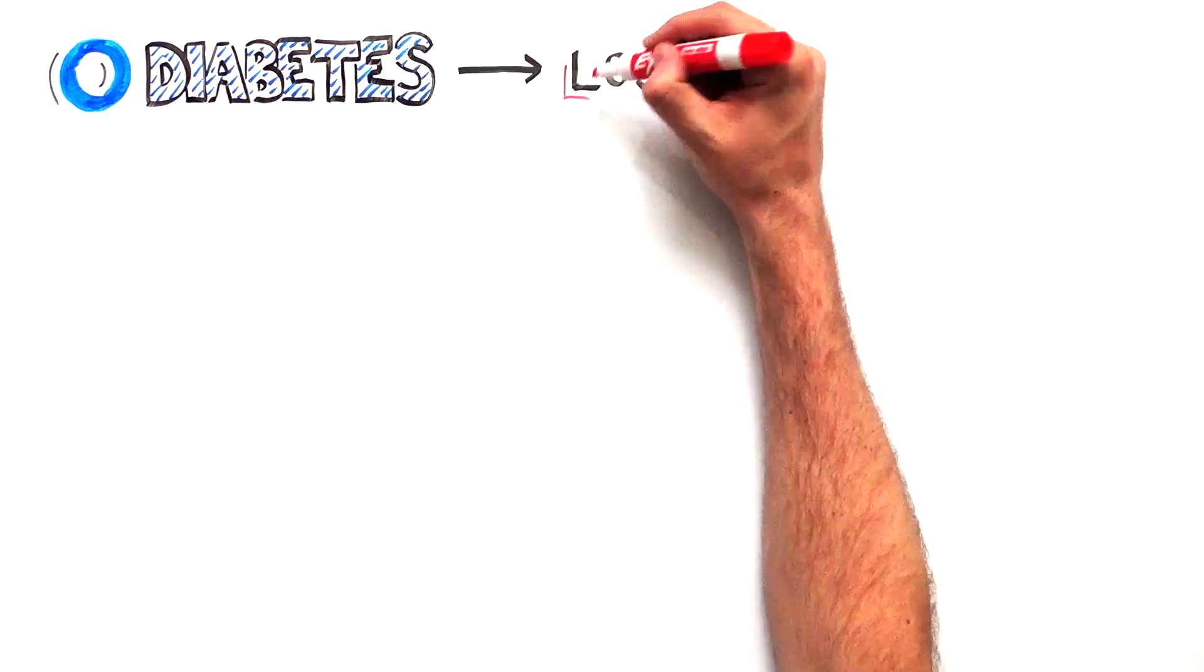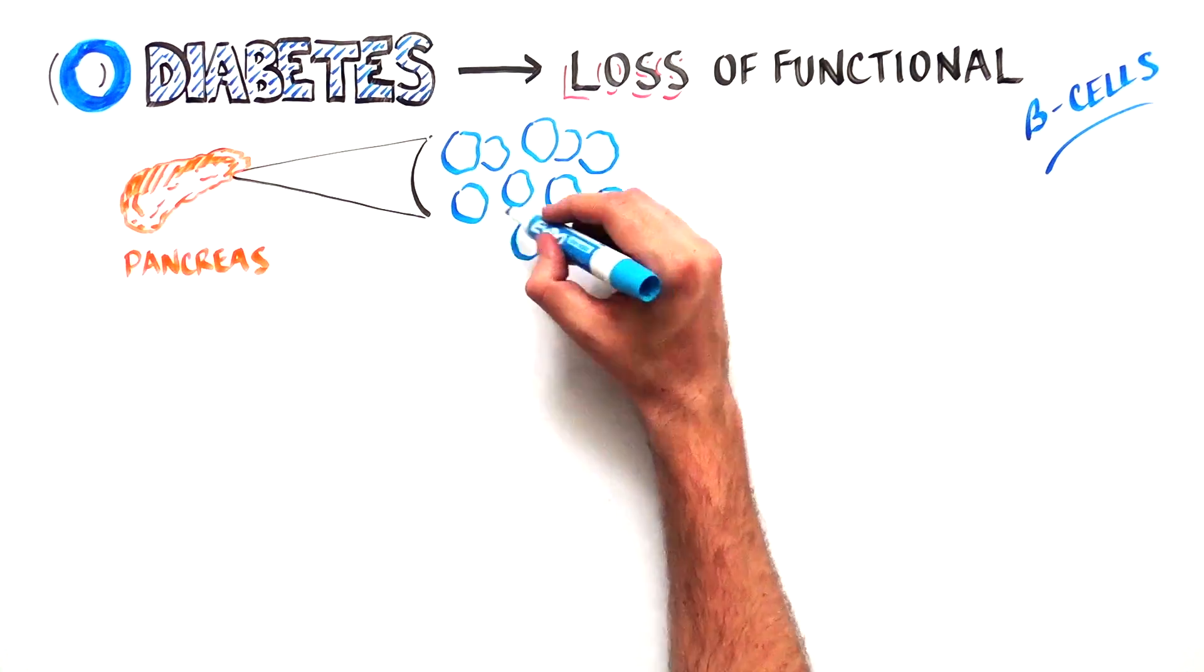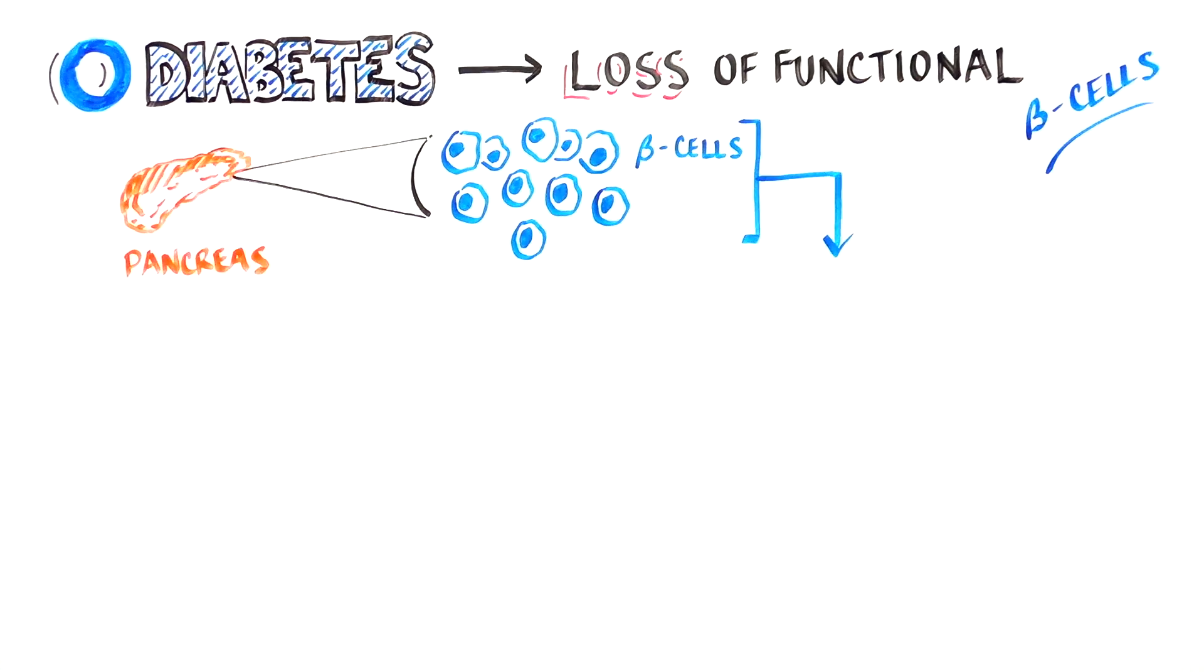Diabetes is caused by the loss of functional beta cells. Beta cells are found in the pancreas and are responsible for controlling blood sugar levels. The body needs a certain level of blood sugar to stay healthy.